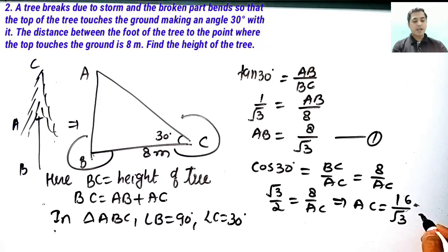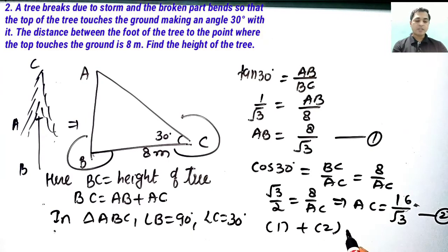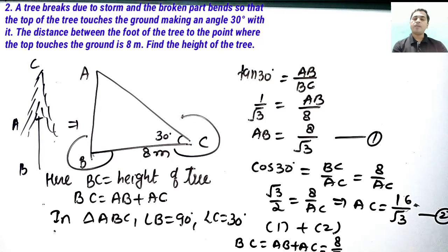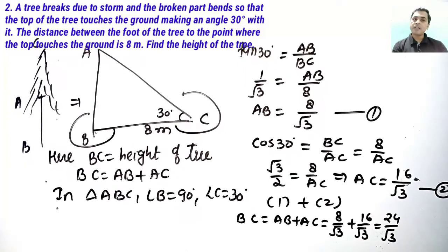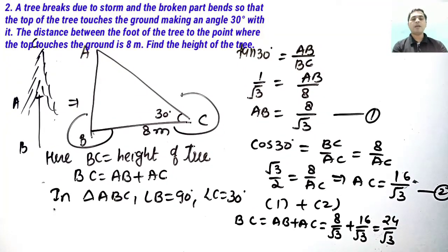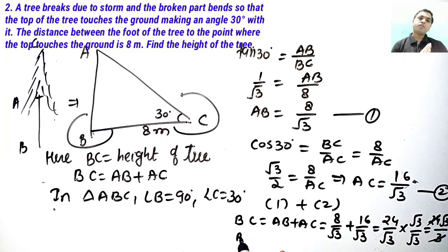Adding results 1 and 2 to get the height of the tree: BC = AB + AC = 8/√3 + 16/√3 = 24/√3. Rationalizing, we multiply by √3/√3 to get 24√3 / 3. Simplifying, 24 divided by 3 gives 8. So the height of the tree is 8√3 meters.